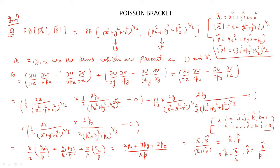When we evaluate all the partial derivatives — ∂u/∂x, ∂v/∂px, ∂u/∂px, ∂v/∂x, and similarly for y and z components — and substitute them into the Poisson Bracket, we finally obtain the relation: (x/r)(px/p) + (y/r)(py/p) + (z/r)(pz/p).